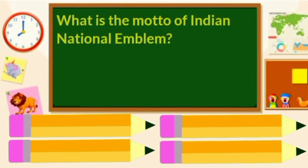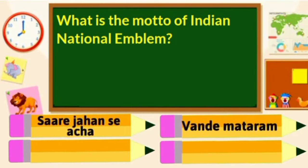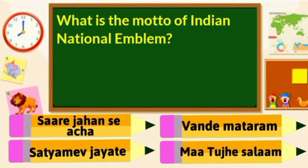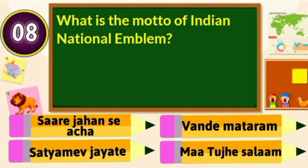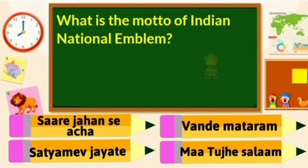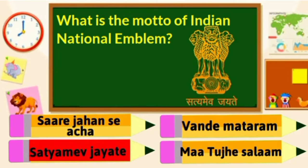What is the motto of the Indian National Emblem? Saare Jahan Se Achcha, Vande Mataram, Satyamev Jayate or Maa Tujhe Salaam? Satyamev Jayate is the motto of the Indian National Emblem.